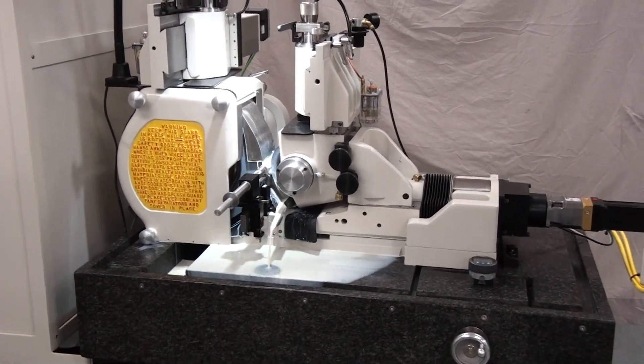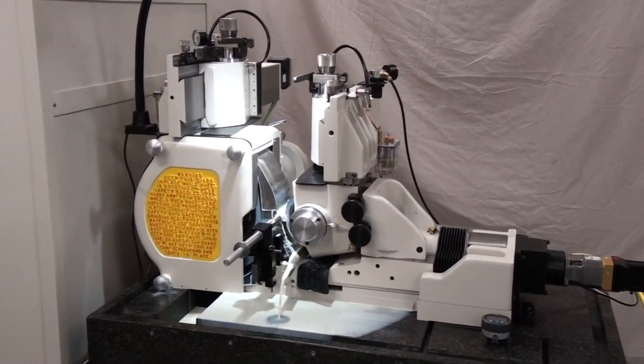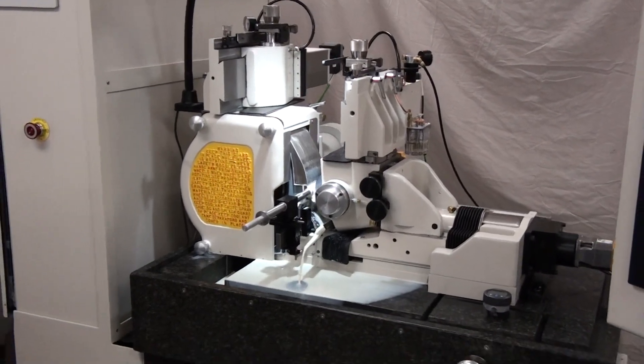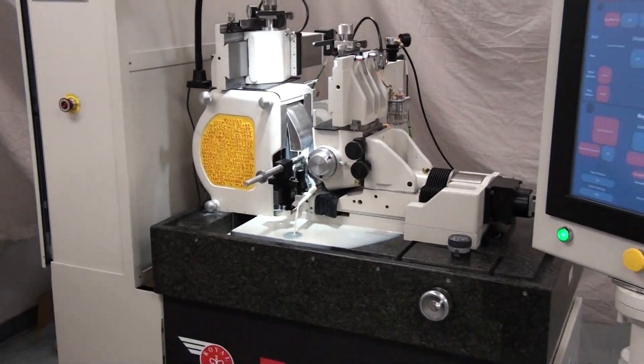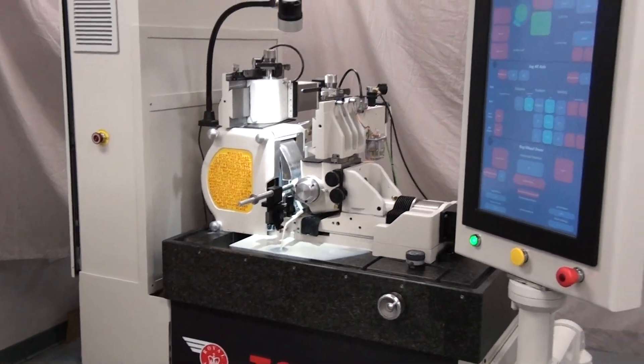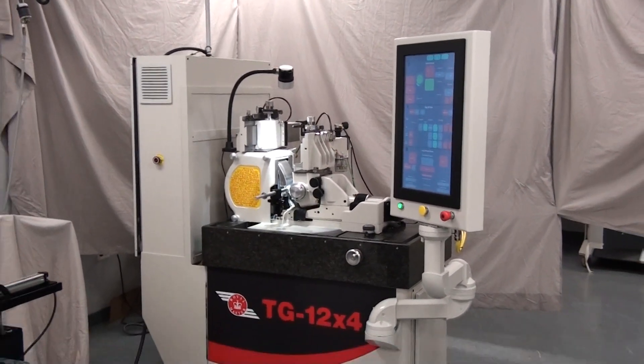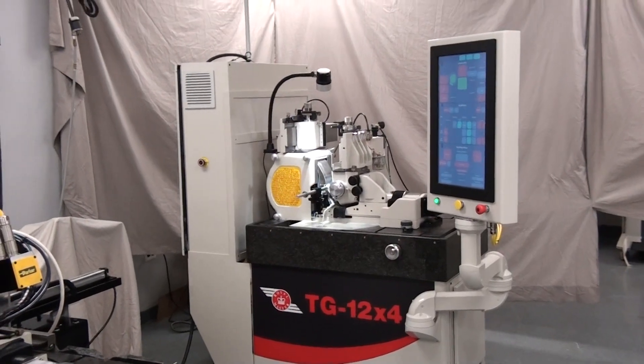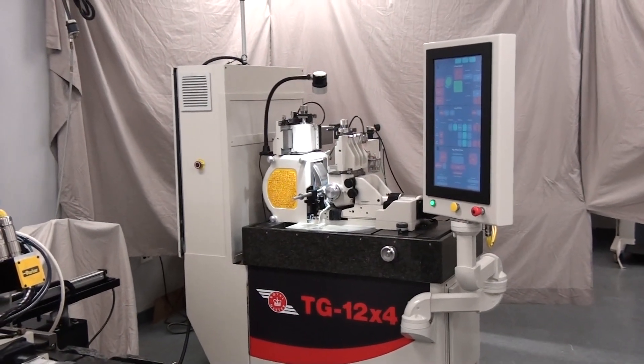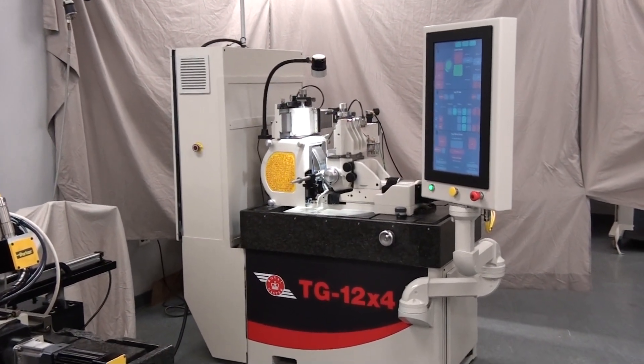This latest version of the Royal Master High Accuracy Centerless Grinder maintains a compact footprint and user-friendly machine controls. We have advanced the electronics to provide a more flexible and more robust platform for our machine and accessories controls. The bedrock foundation is an accurate and rigid machine.